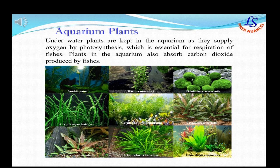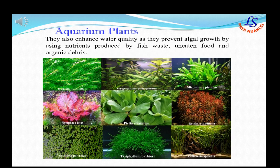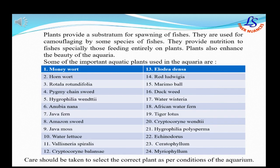Aquarium plants are very important because they supply oxygen by photosynthesis, which is essential for the respiration of fishes. They also enhance water quality as they prevent algal growth by using nutrients produced by fish waste, uneaten food and organic debris. Plants provide a substratum for spawning of fishes and are used for camouflaging by some species. They also provide nutrition to fishes, especially those feeding entirely on plants, and enhance the beauty of the aquaria.